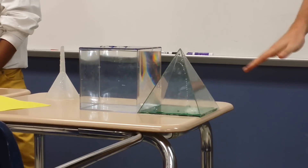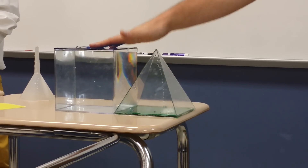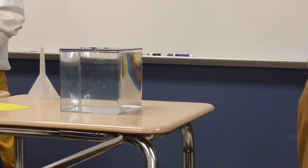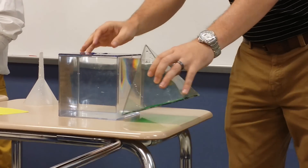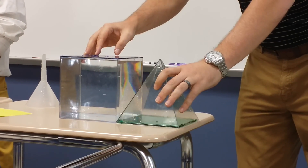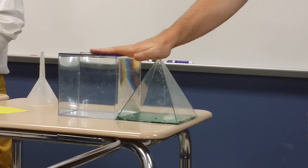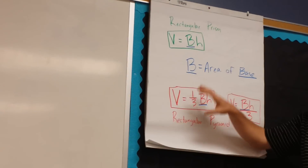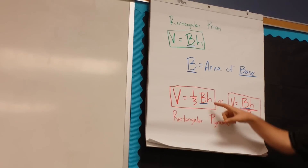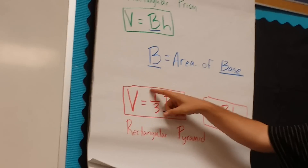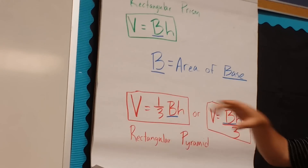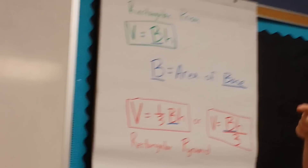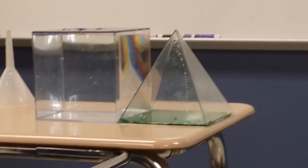Are the heights the same? If I take my hand, they're the exact same height. Now the height is not the slant length — the height is actually from the bottom to the top. Because if I measure the slant length, that's not the same. So if I lay them flat on the ground, they have the exact same height. Big B is the same in both of them, whether it's a prism or a pyramid, and the height is the exact same. The only difference is that one-third — the pyramid is one-third of the volume of the prism.